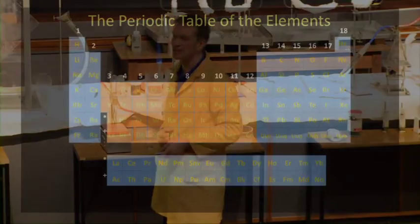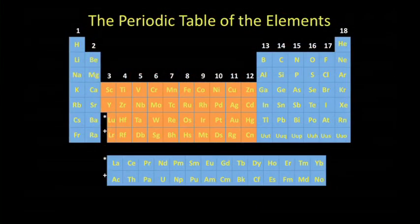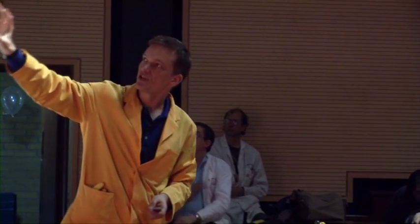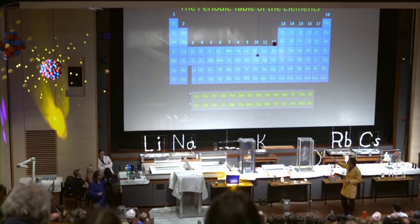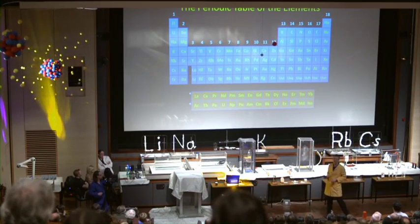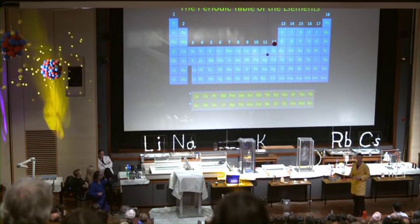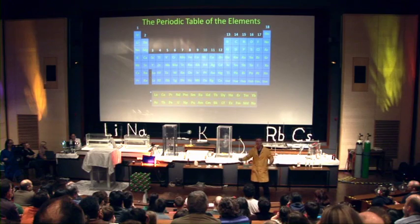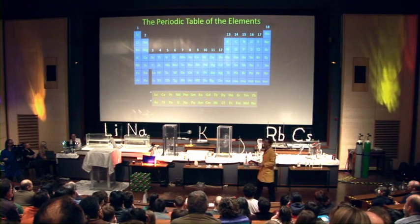We sort of skipped over these ones in the middle. These are called the transition metals. These include things like iron, copper, nickel, and so on. These are common metals. They're in the transition metals. And we also glossed over these ones down the bottom there. They're sort of squeezed in where you see those flashing symbols. This would make the periodic table far too long, so usually they're cut out and put at the bottom instead.